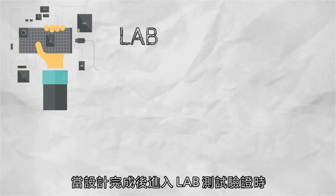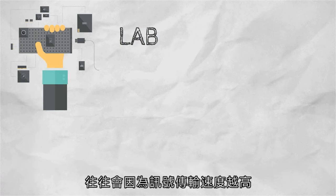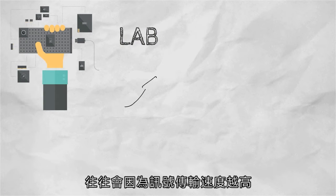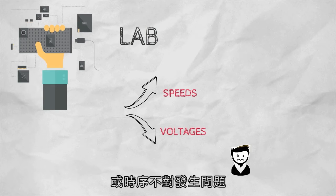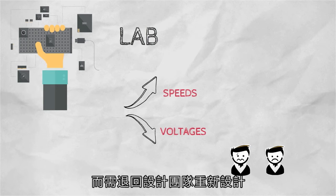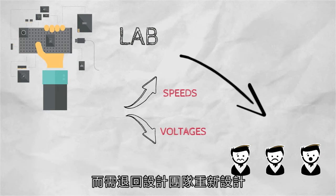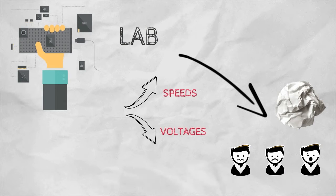When the design is complete, it goes to the lab for validation. However, due to higher speeds of signals and lower operating voltages, more times than not, problems are found in the lab and those designs end up going back to the design team for rework.